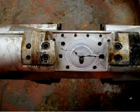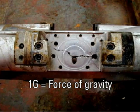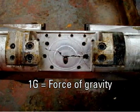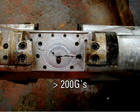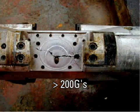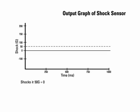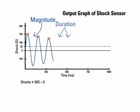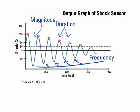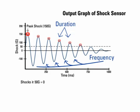Shocks are measured in G's by an accelerometer. 1G equals the force of gravity, and shock magnitudes registered via downhole tools can exceed 200 G's. The severity of the shock depends on three parameters: 1. The magnitude of the shock, 2. The duration, or length of time, of the shock, and 3. The frequency, or number of shocks. Magnitude is the force the tool sees when it impacts the borehole wall. Duration measures how long the shock lasts in seconds. Frequency is the number of times the tool sees a shock greater than the accelerometer's threshold.